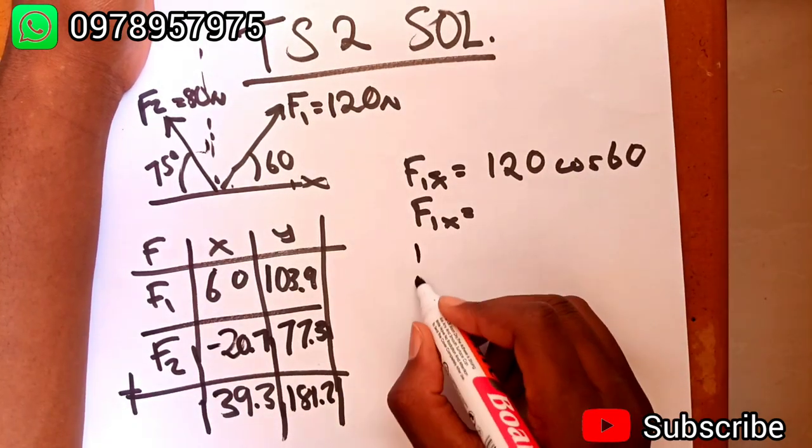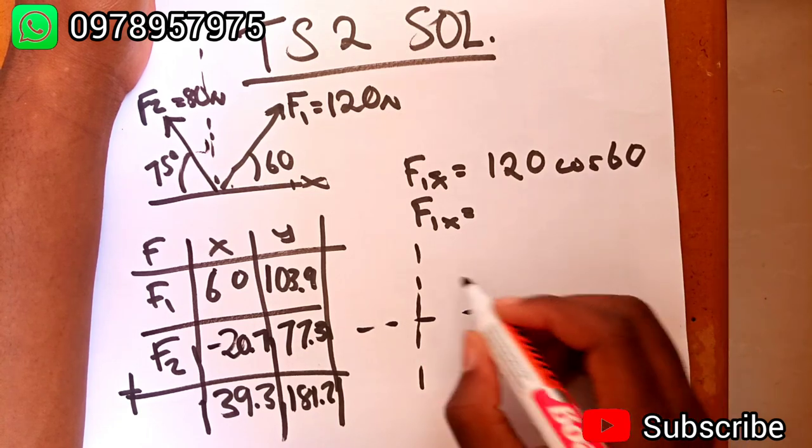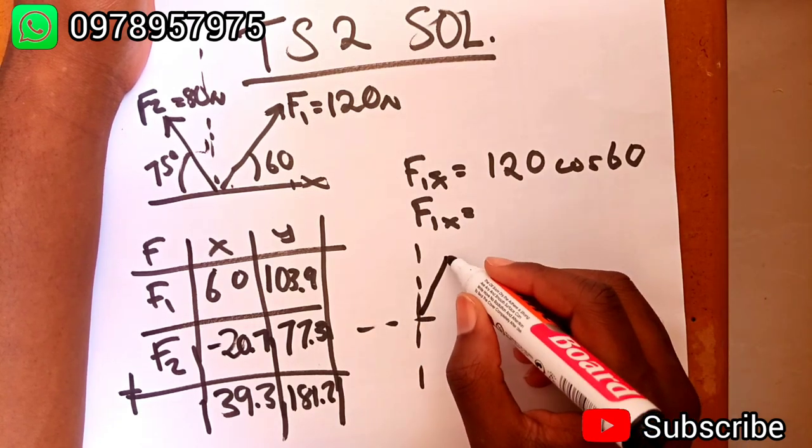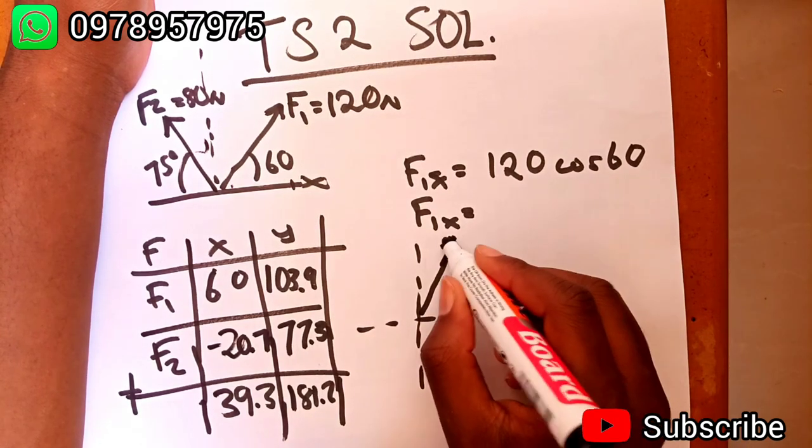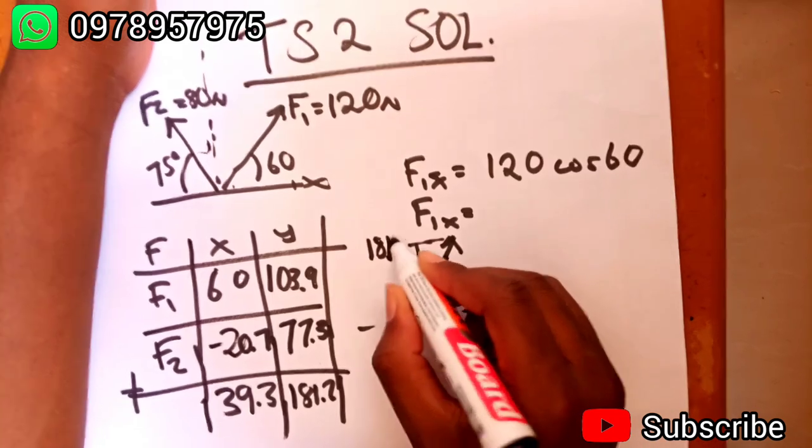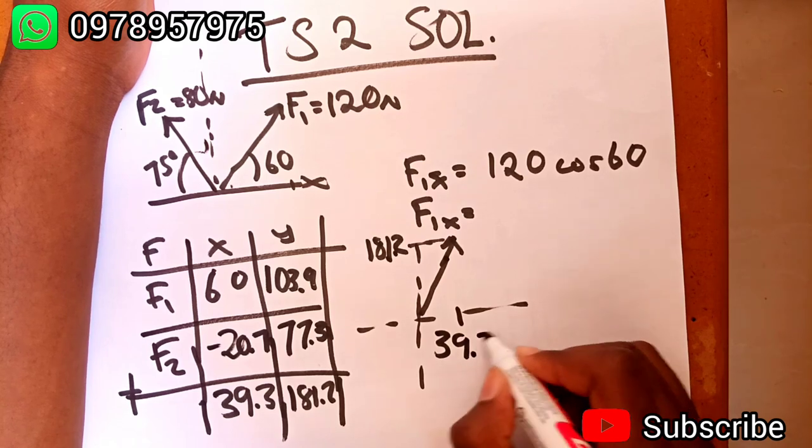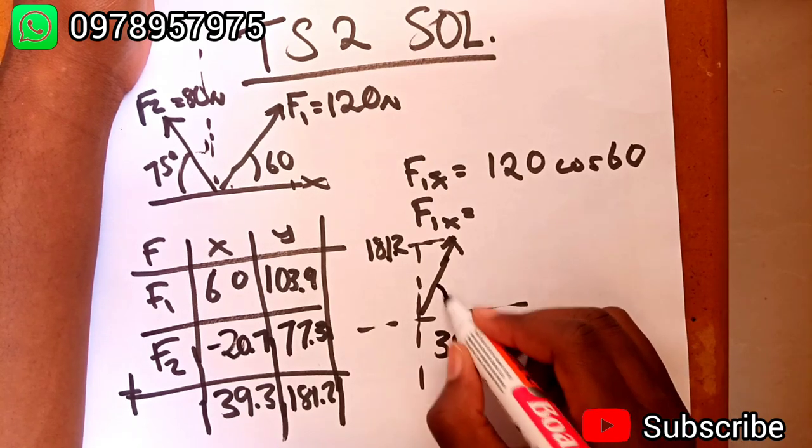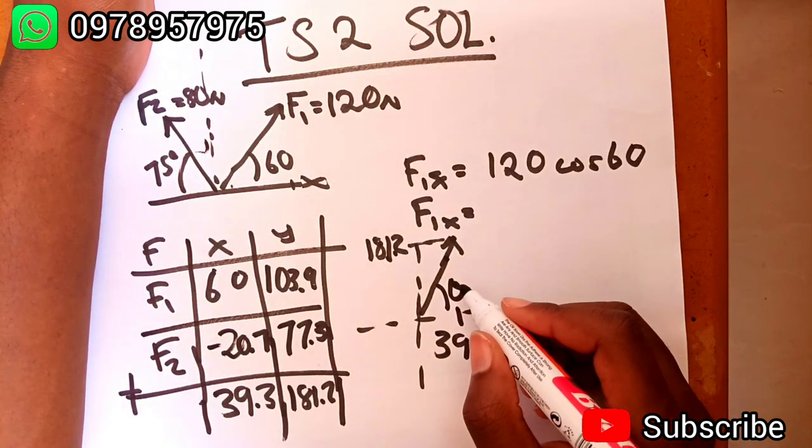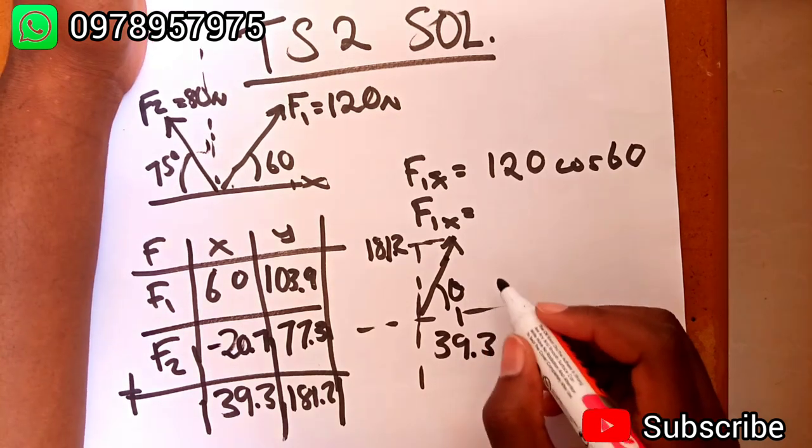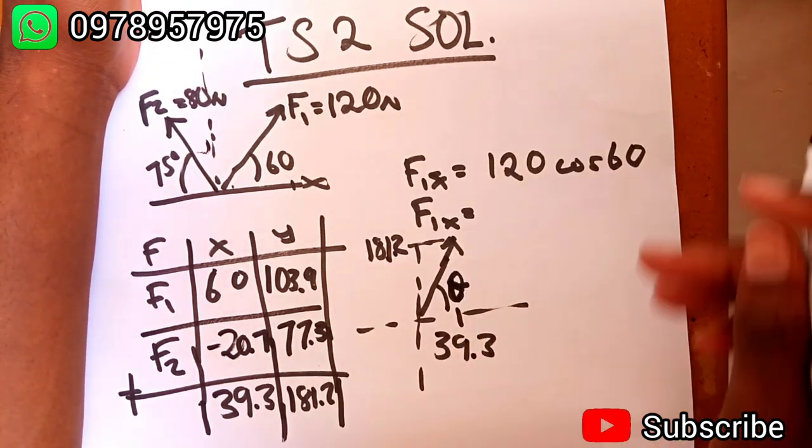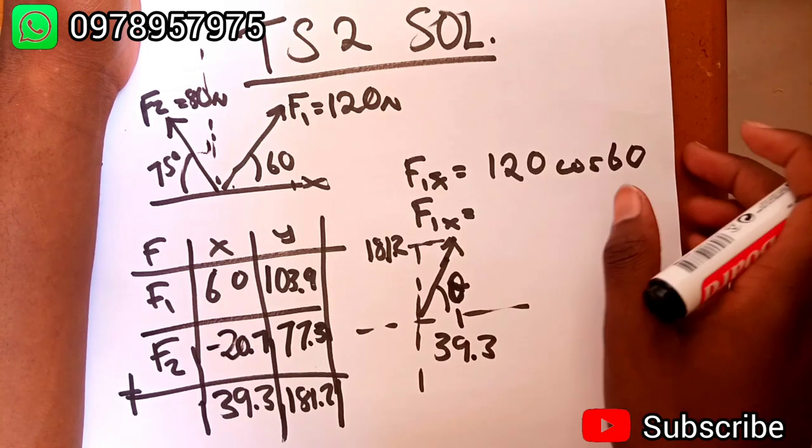And then this one here, that's 103.9 plus 77.3, going to give us 181.2. So now we're going to have the resultant to be somewhere there. This one is 181.2, then here we have got 39.3. We're going to try to find the angle.